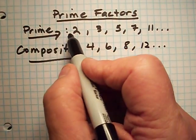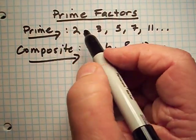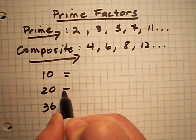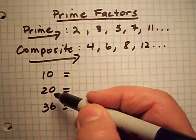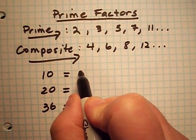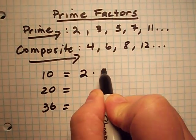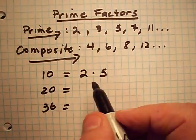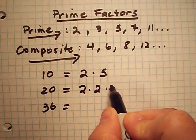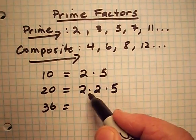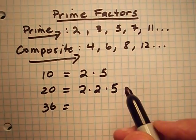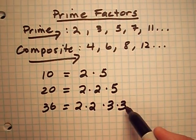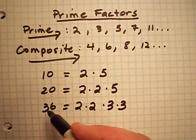Prime numbers can only be divided by itself and 1. Let's look at three numbers: 10, 20, and 36, and I want to write the prime factors of each. For example, 10 — the prime factors are 2 times 5. Both 2 and 5 are prime factors of 10. For 20, 2 times 2 times 5 are all prime factors of 20 — 2 times 2 is 4, times 5 is 20. For 36, 2 times 2 times 3 times 3 are all prime factors of 36.